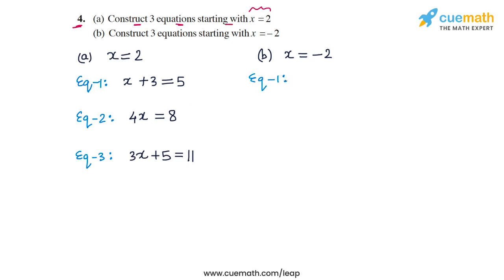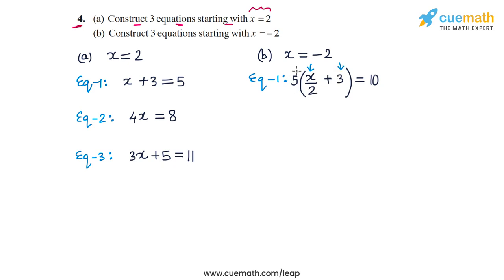For the first equation with x = -2, let's divide x by 2, which gives minus 1. Then add 3 to get 2, and multiply by 5 to get 10. So the equation 5 times (x/2 + 3) = 10 is satisfied by x = -2.